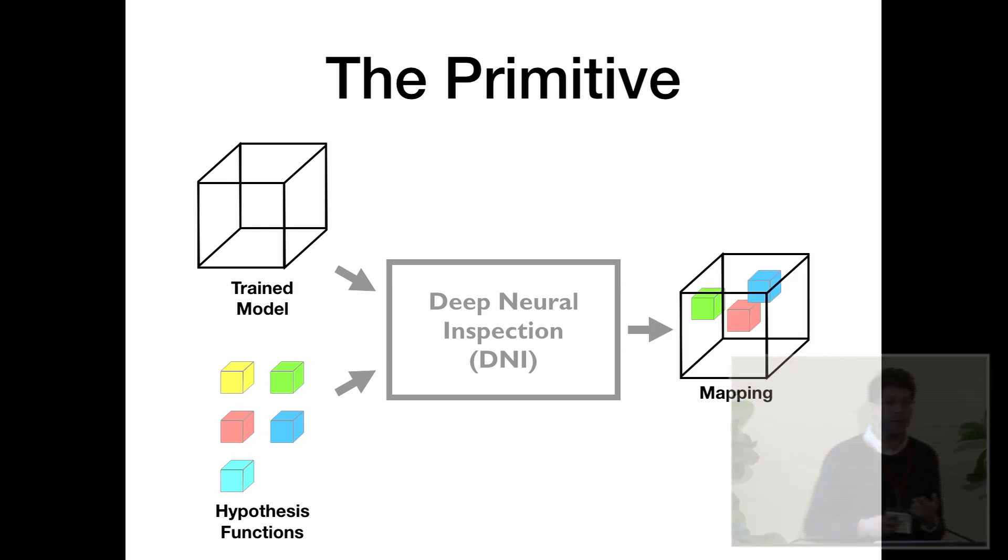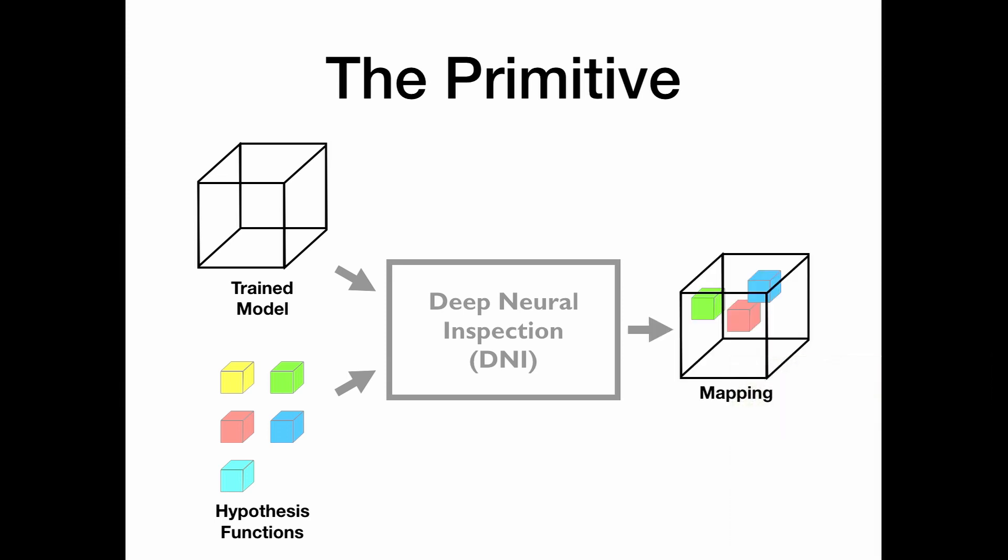So the output of the system is basically a series of scores that will tell you to what extent a subset of the model replicates the logic of this function. So basically a deep neural inspection answers two questions. First of all, does the model learn this logic? And if so, where? Which hidden units within the model work together to replicate the functionality of those functions?